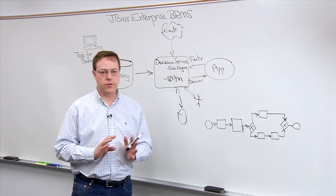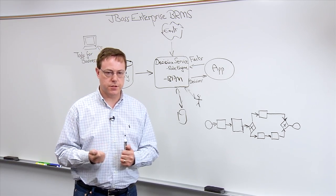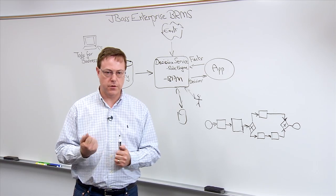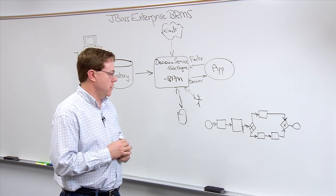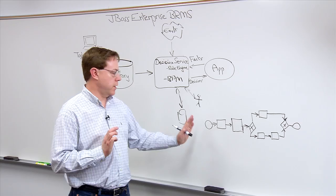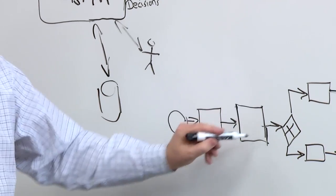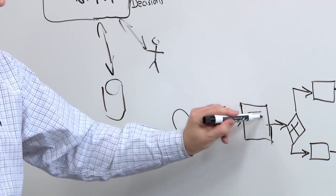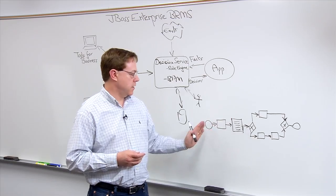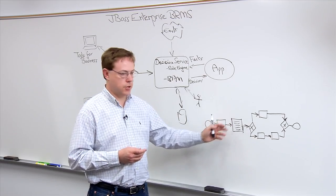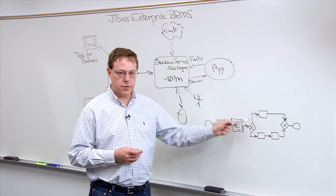What's really significant in 5.3 is the integration between business process management, business rules, and complex event processing — everything is very tightly integrated together. For example, we can leverage business rules directly within a business process. We can use a step in the business process to actually evaluate a set of rules — directly calling the rule engine, presenting facts obtained from the process, obtaining a decision, and then deciding what the next steps in that process should be.